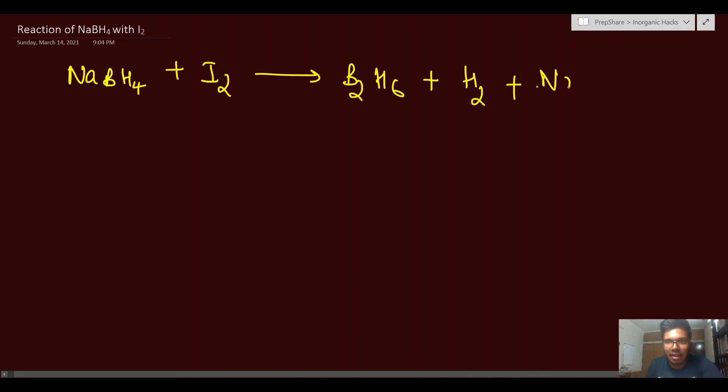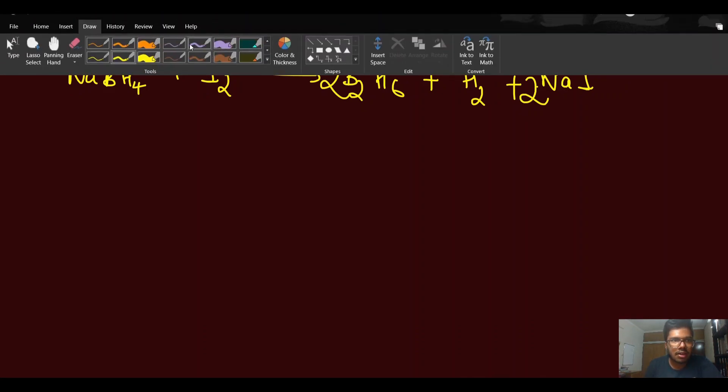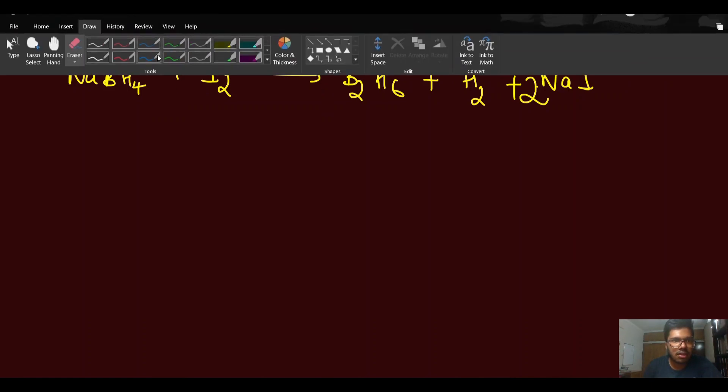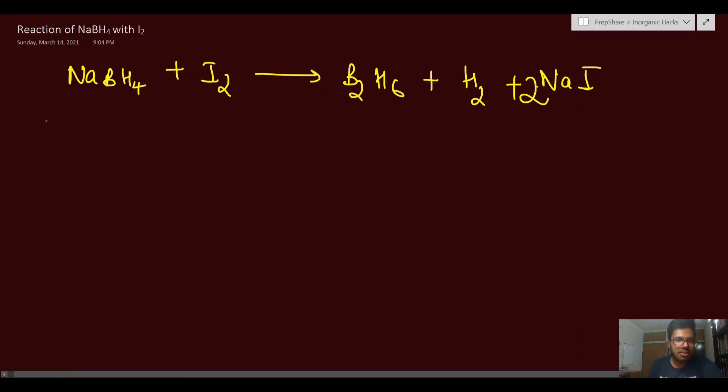Today I'll help you demystify this reaction. The reaction is NaBH4 reacts with iodine, produces Diborane which is B2H6. You also get hydrogen and you get NaI. You can balance this reaction. Actually, let me correct that. Anyway, let's continue.